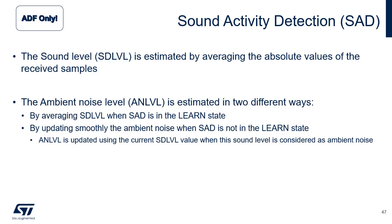Once enabled, SAD continuously computes the sound level value. The sound level represents the average of the absolute value of a number of PCM samples given by FR size. The ambient noise level, or ANLVL, is computed when the SAD working mode is binary 00 or 10. The ambient noise level is estimated in two different ways: by averaging SDLVL when SAD is in the learned state, and by updating smoothly the ambient noise when SAD is not in the learned state. ANLVL is updated using the current SDLVL value when this sound level is considered as ambient noise.